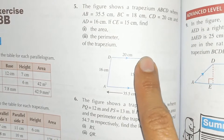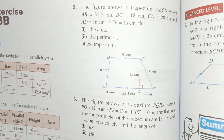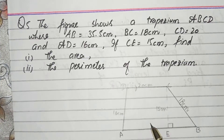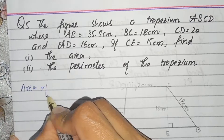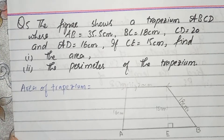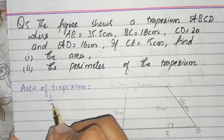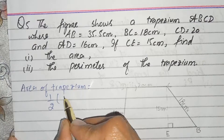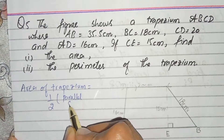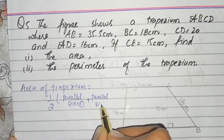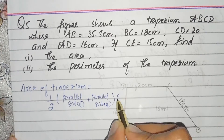We will find the area of our trapezium. Look at the boundary lines — these are all the things given. Now students, question number 5. We will write the formula. Area of trapezium equals one-half multiplied by the sum of the parallel sides, that is parallel side L1 plus parallel side L2, multiplied by height.